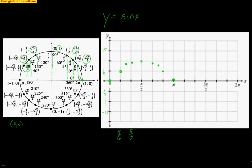Continuing on: at 7 pi over 6 we dip down to negative 1/2, into the negatives. At 5 pi over 4, we're at negative radical 2 over 2, about negative 0.7. At 4 pi over 3, we're at negative radical 3 over 2, about negative 0.86. At 3 pi over 2, we've dipped all the way down to negative 1. Then at 5 pi over 3 we have negative radical 3 over 2, at 7 pi over 4 we're at negative radical 2 over 2, at 11 pi over 6 we're at negative 1/2, and at 2 pi, the sine value is back to 0.